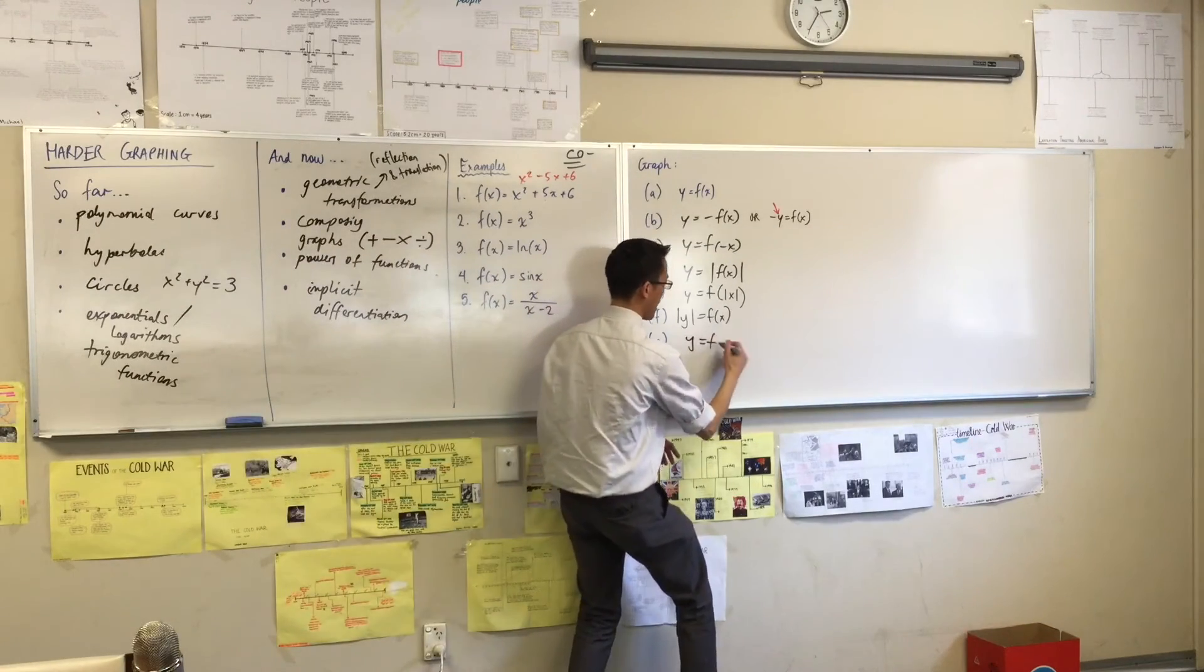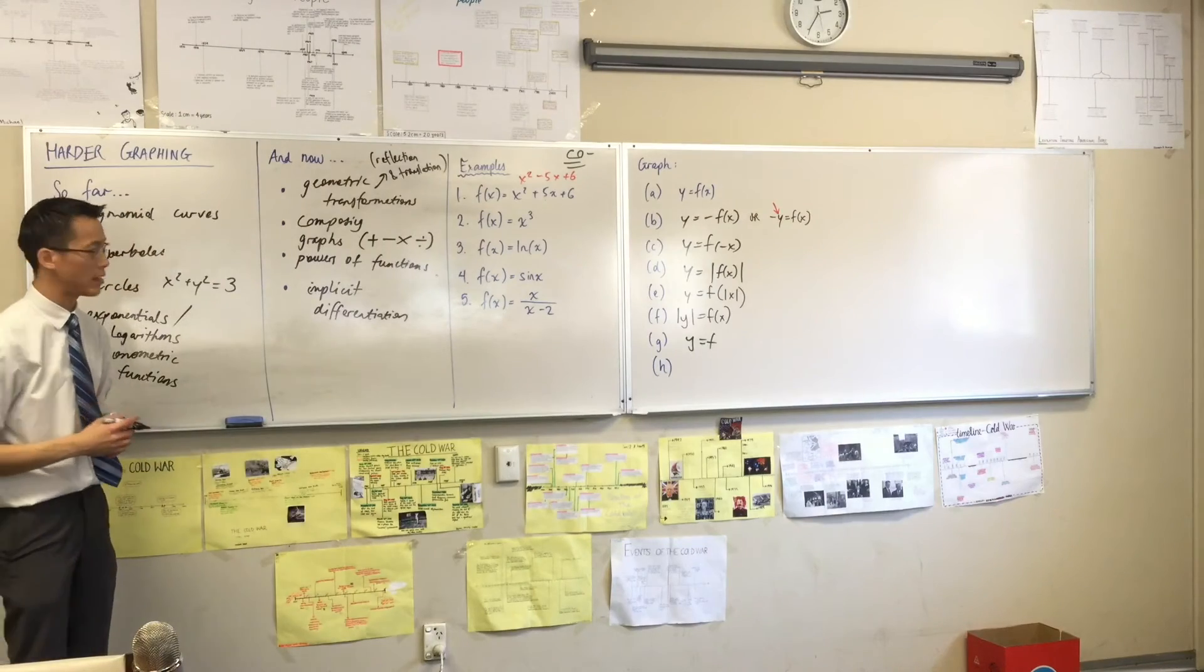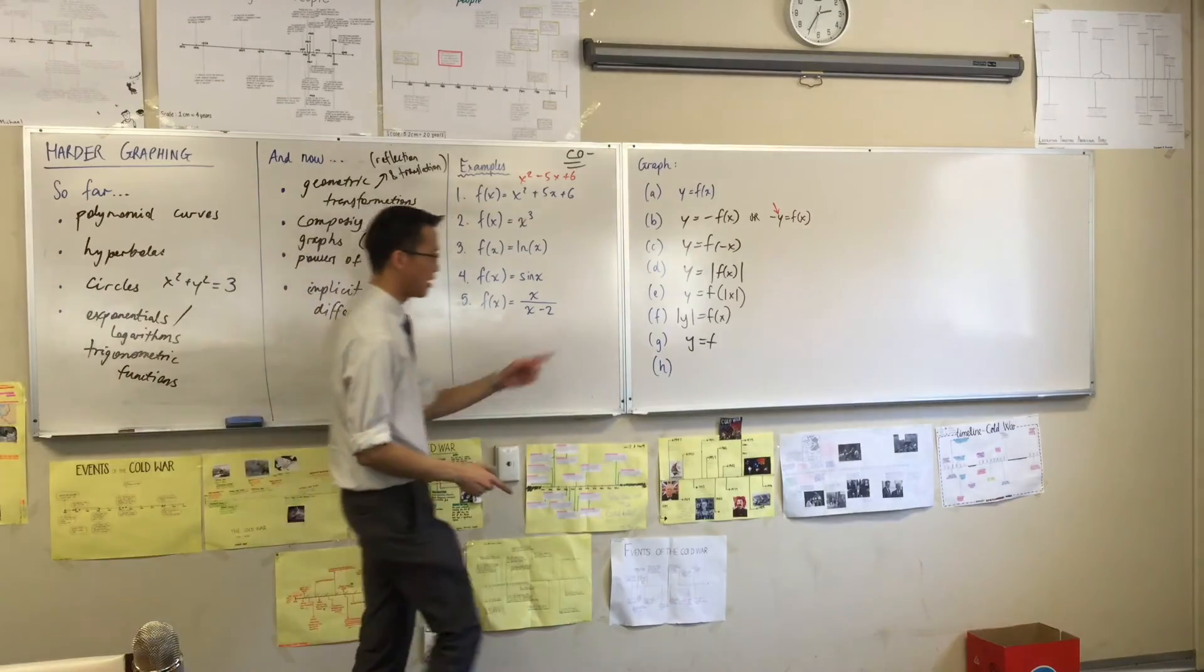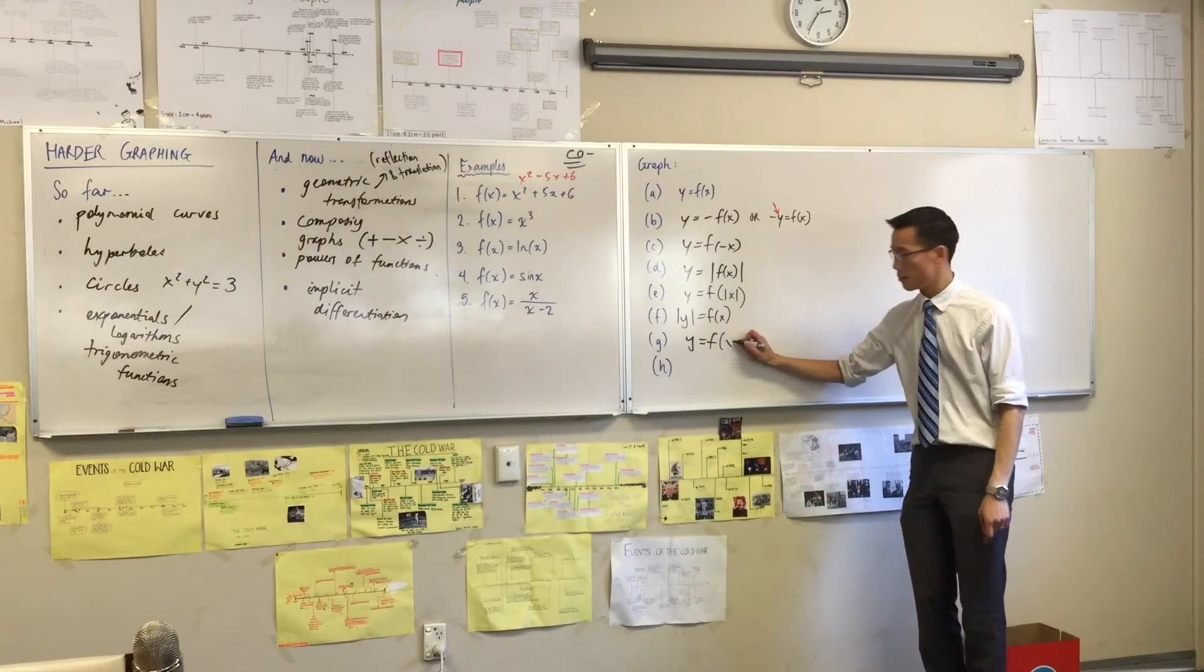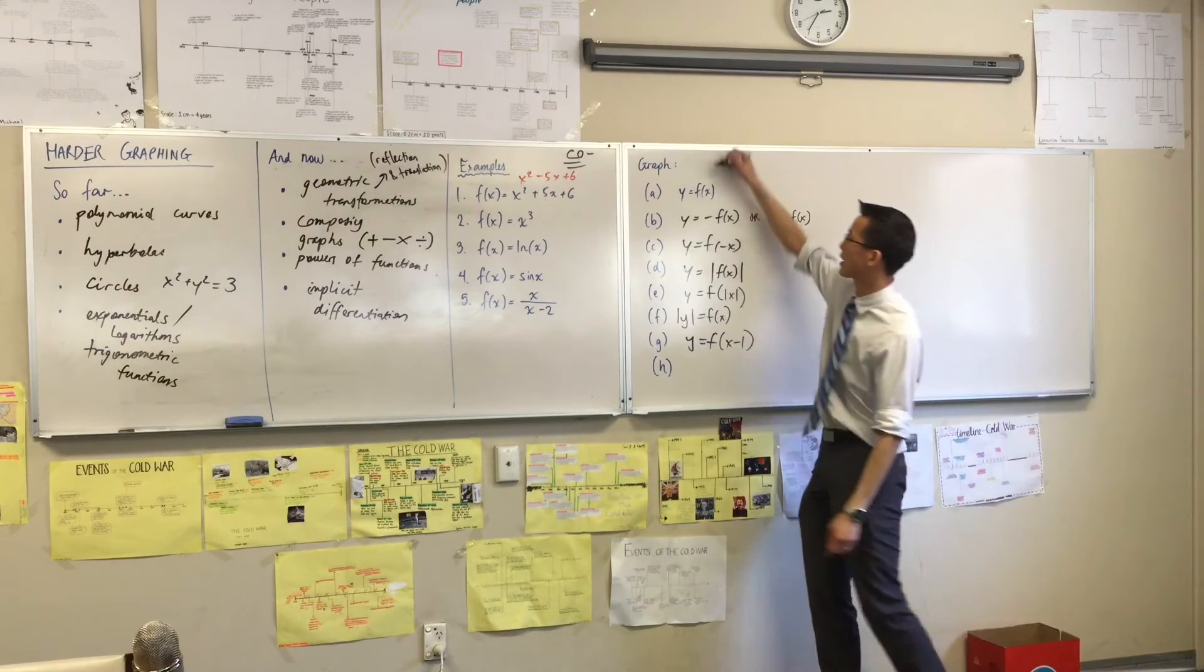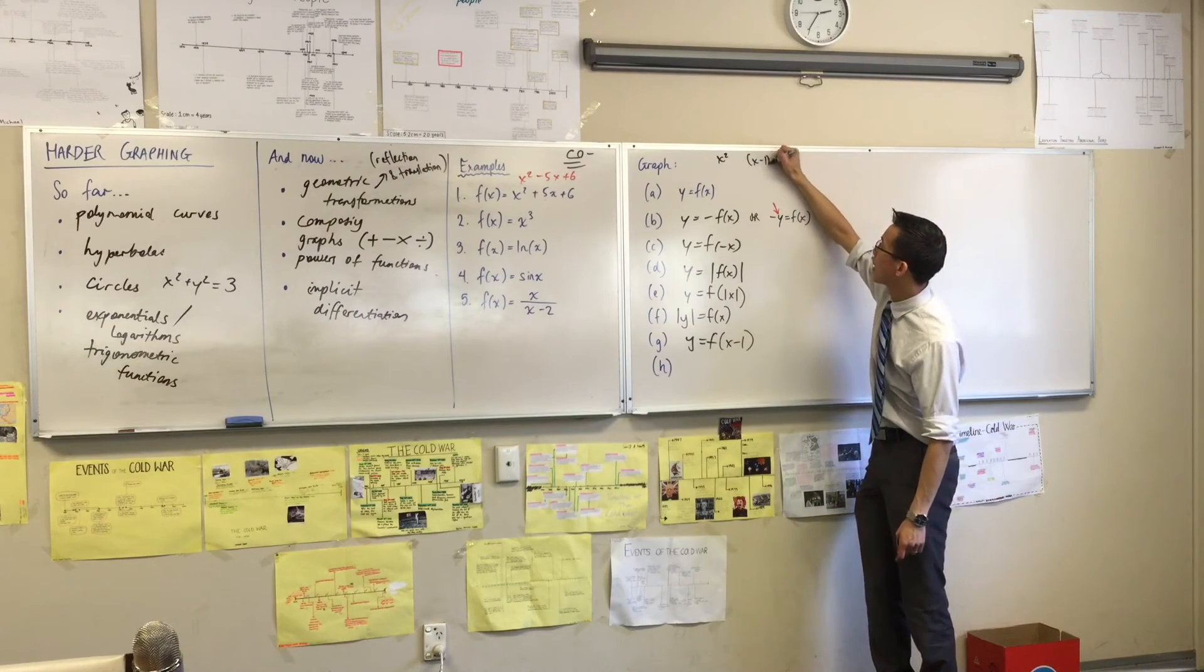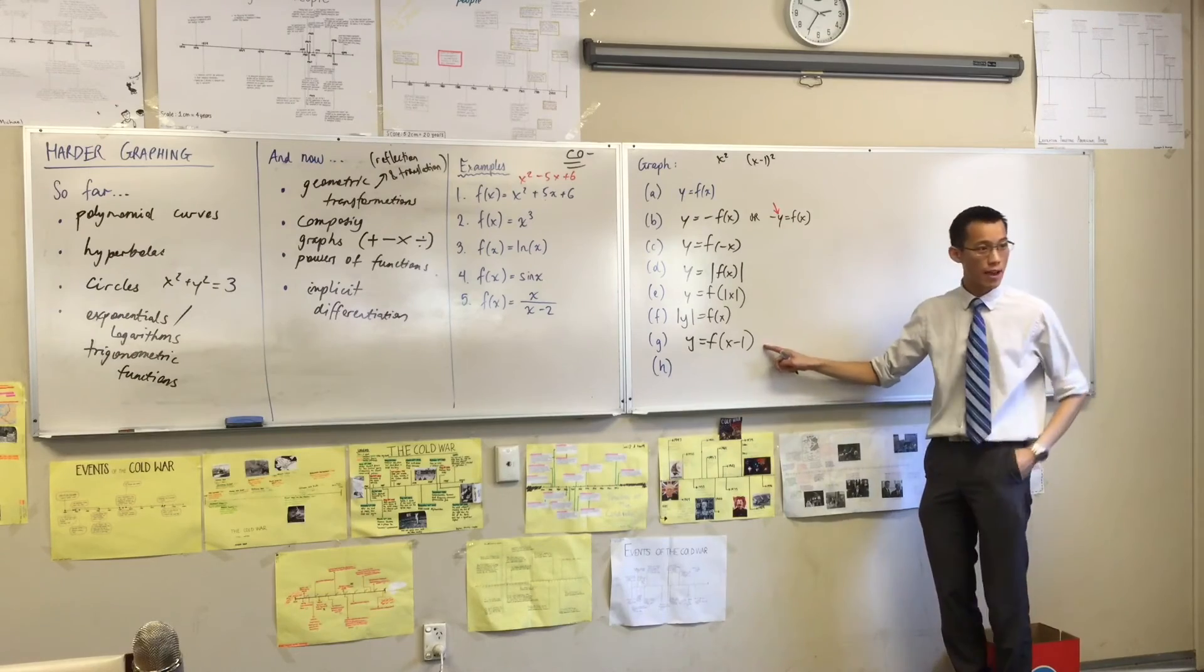Let's just go with one unit, I'll make it nice and simple. If I wanted to translate this one unit to the right, how's that going to change? This is going to be x minus one, isn't it? Because you can compare something like x² and you know exactly what that looks like, with something like (x - 1)², and that's just going over. So this is one unit to the right.